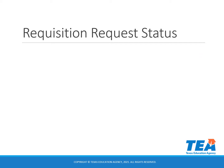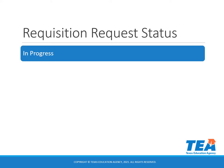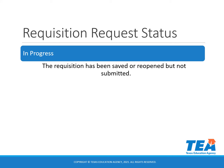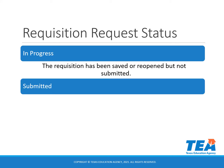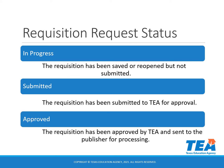There are three different requisition statuses. In Progress means the requisition has been saved or reopened but not submitted. Submitted means the requisition has been submitted to TEA for approval. Approved means the requisition has been approved by TEA and sent to the publisher for processing.